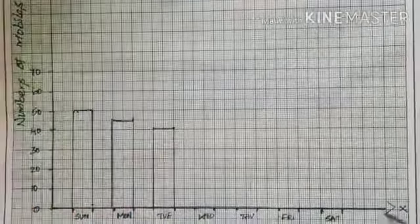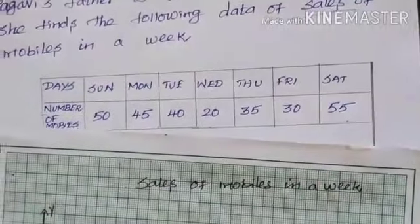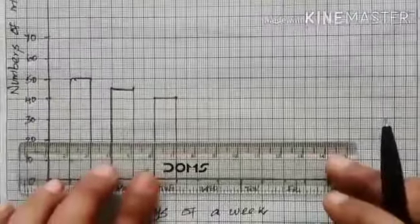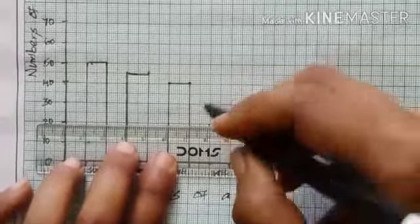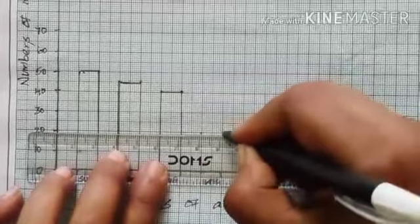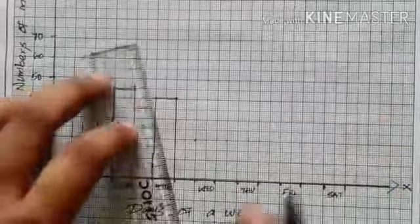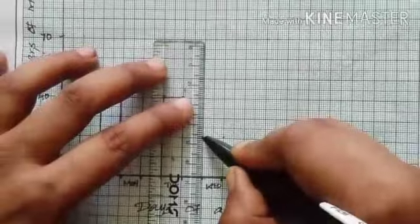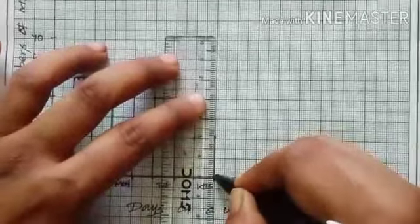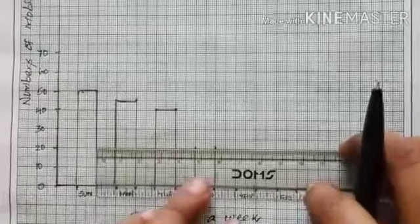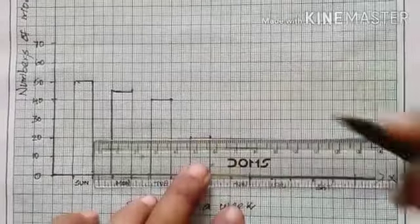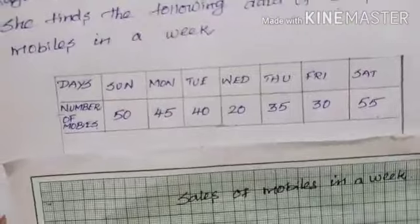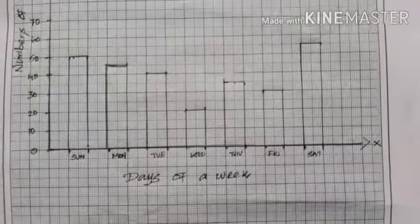Wednesday — the number of mobiles sold is 20, so draw the bar up to 20. Similarly, you have to complete the remaining days — Thursday, Friday, and Saturday — by drawing their respective bars and completing the bar graph.